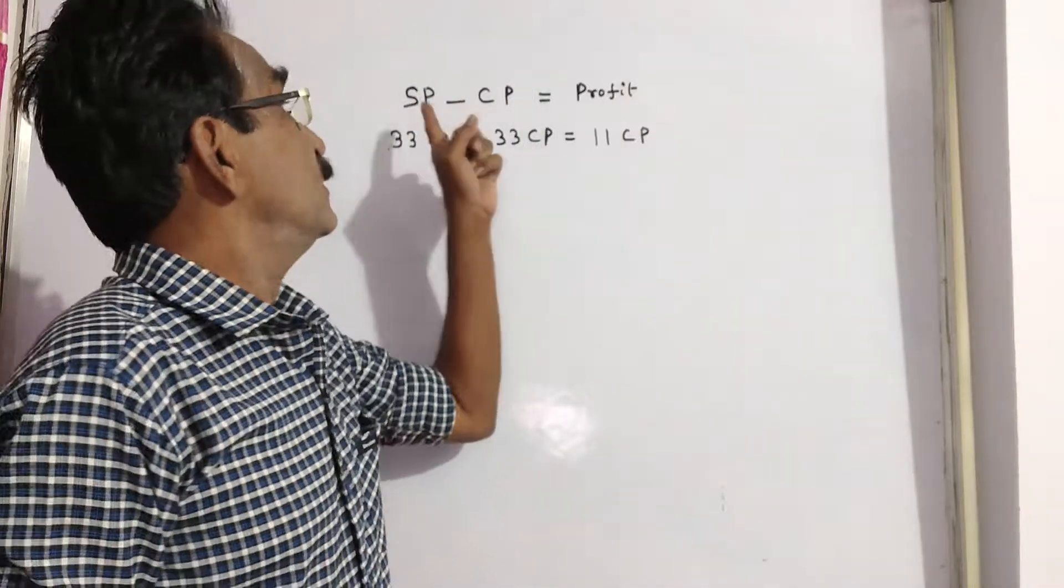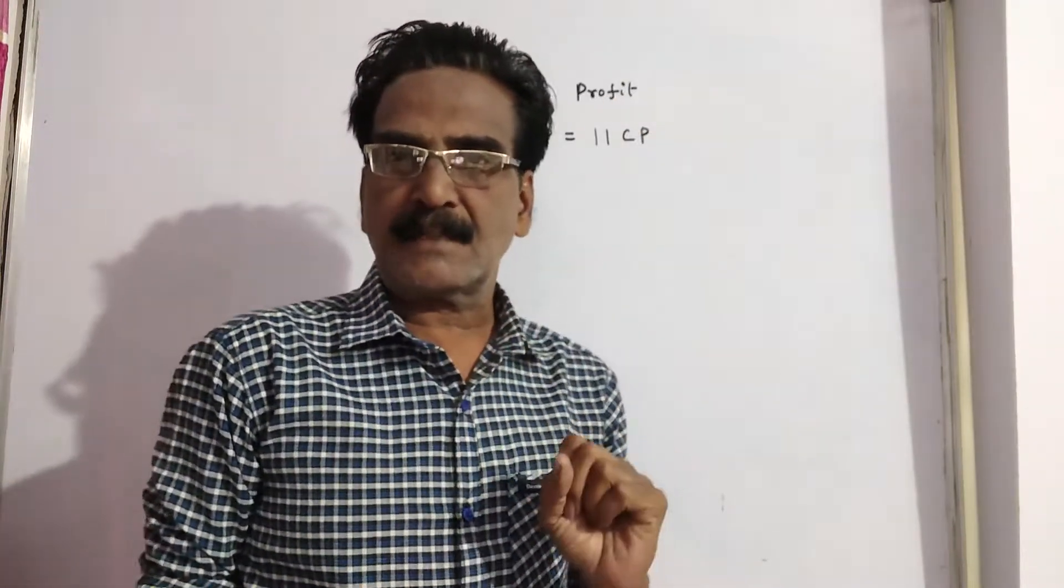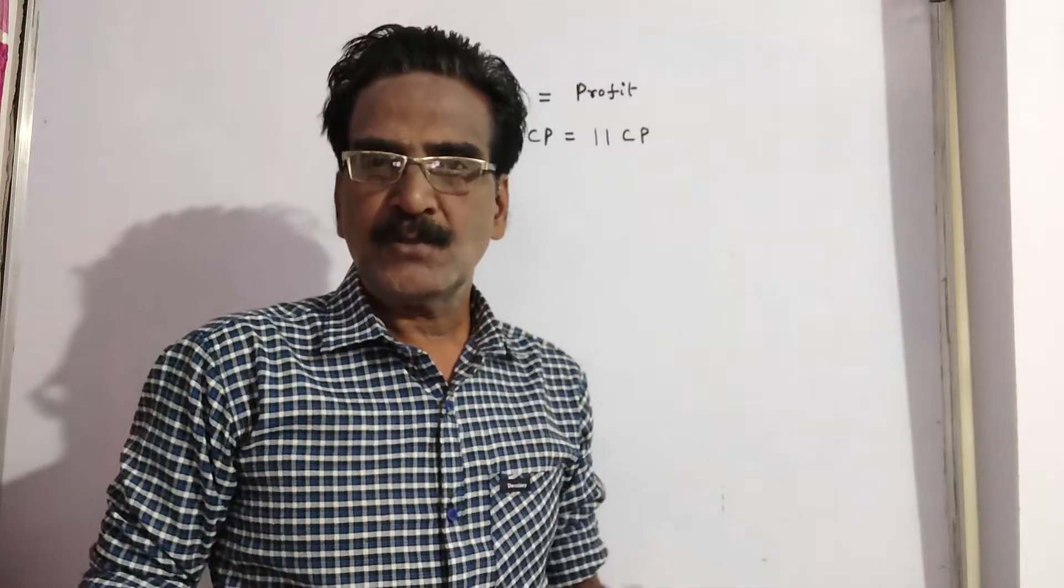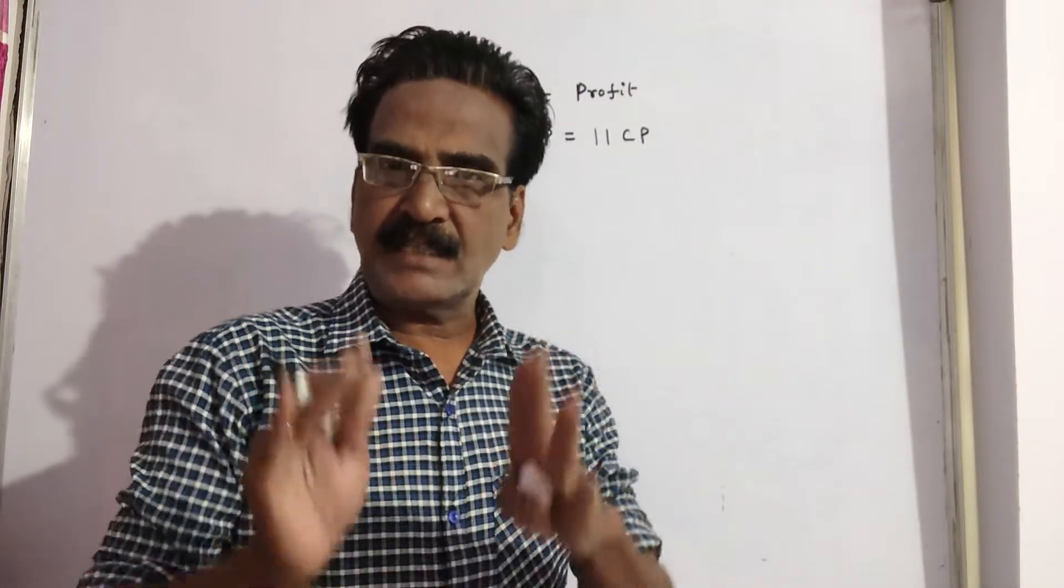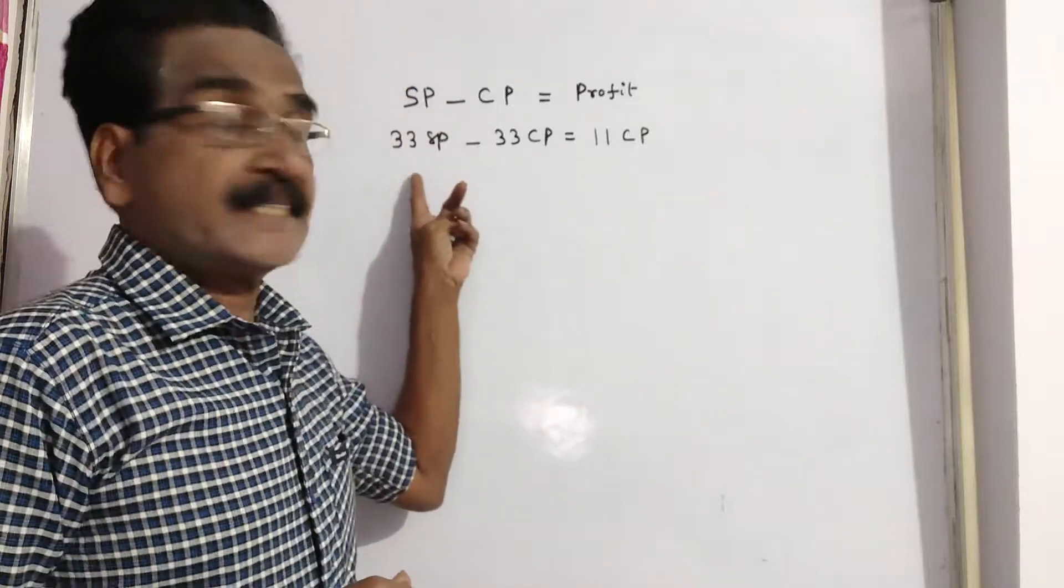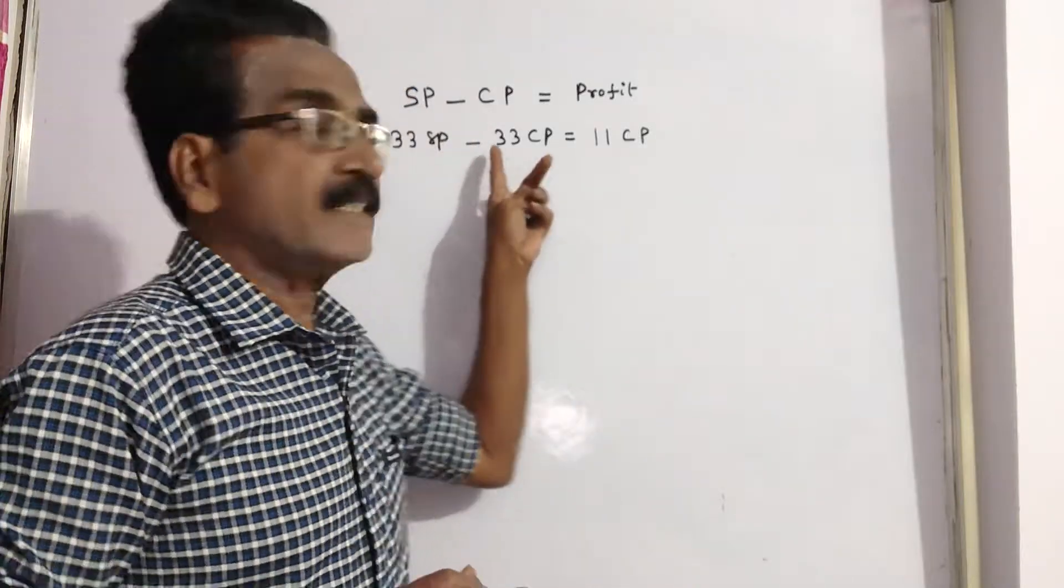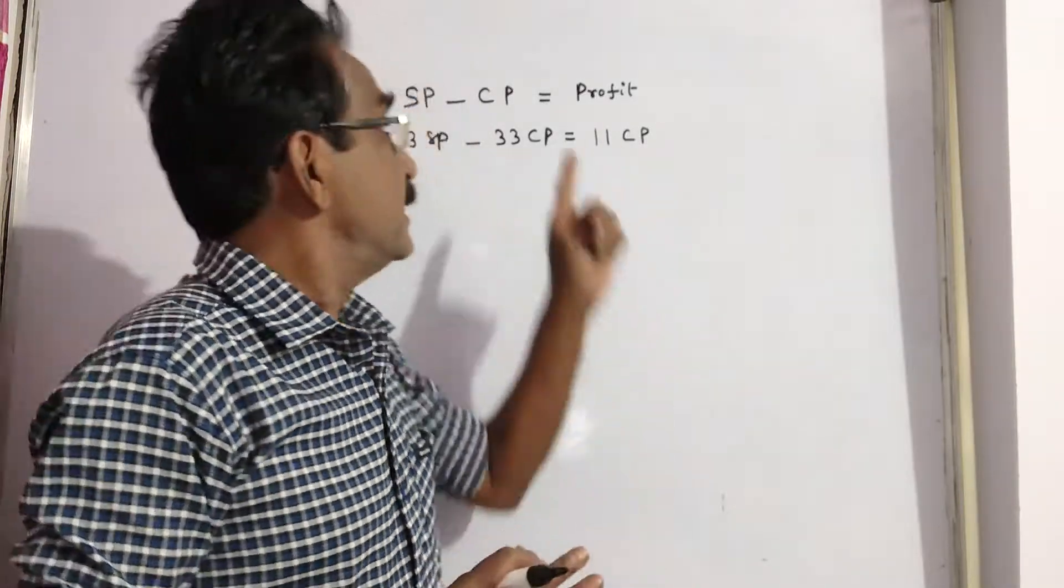Friends, you know profit, sold price minus cost price is equal to profit. So now the profit on selling 33 meters of cloth is 33 meters selling price minus 33 meters cost price is equal to profit.